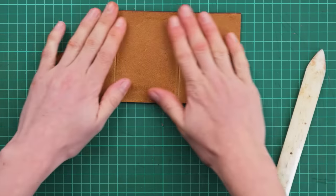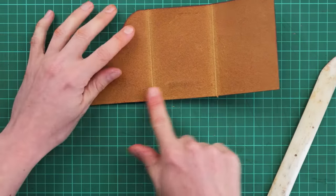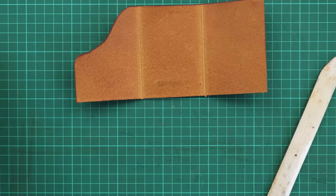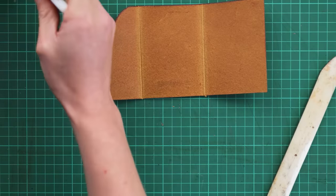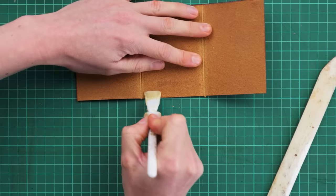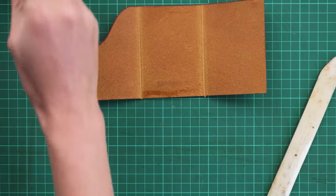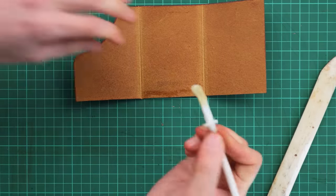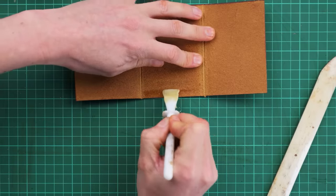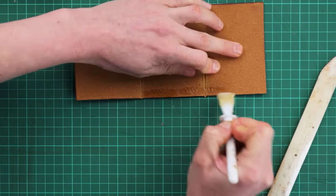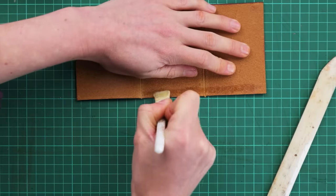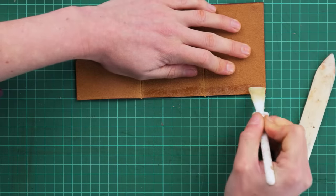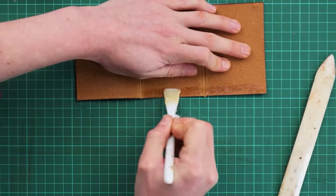And we're now ready to start gluing. So what we're going to do is put some glue on both the inside panel and the back panel and we just need to glue just along the bottom section. So I am using contact adhesive and we just need to wait a little bit for that to go off before we can glue our bits together.